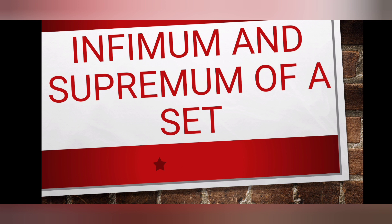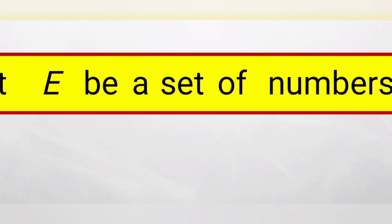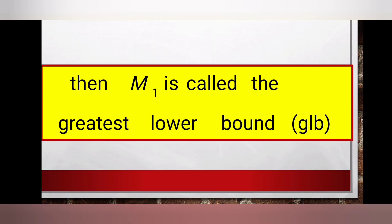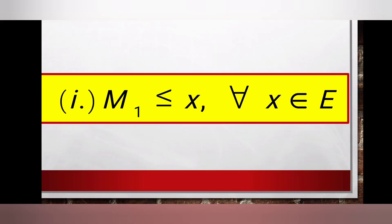This is a video on infimum and supremum of a set. Let's define the infimum of a set. Let E be a set of numbers. Then m1 is called the greatest lower bound or infimum of E if the following conditions hold. The first condition is: m1 is less than or equal to x for all x in E.